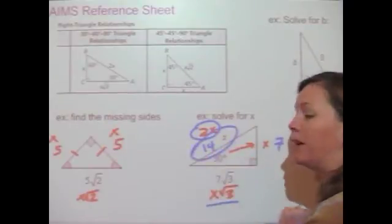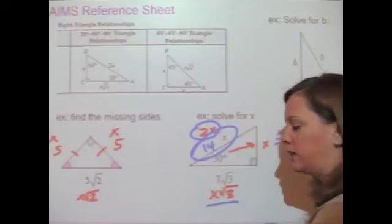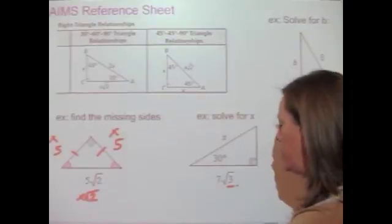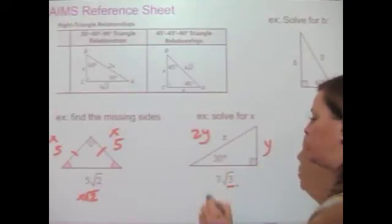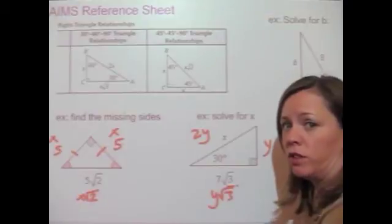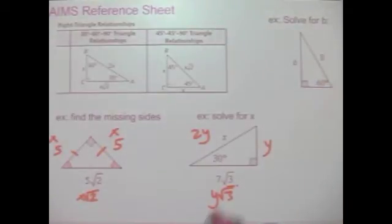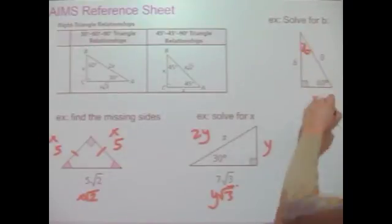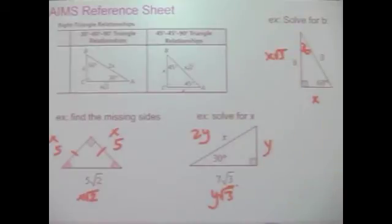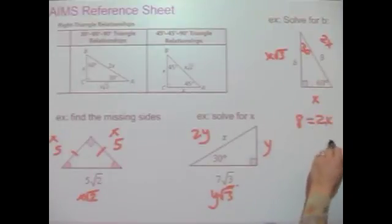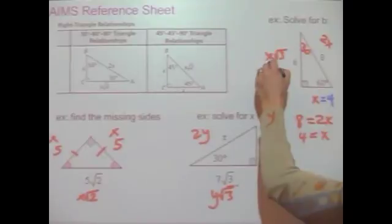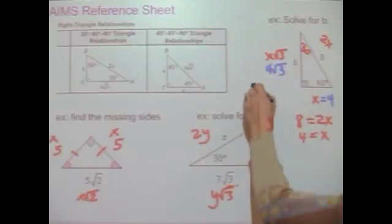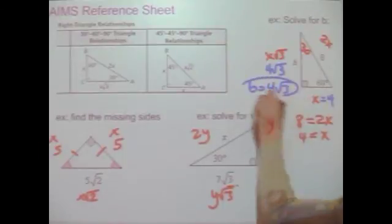So x in this case equals 14. If using two x's is confusing, use y's instead: the short leg is y, the hypotenuse is 2y, and the longer leg is y√3. For the last example, solve for b: the side across from the 30 is x, across from the 60 is x√3, and the hypotenuse is 2x. The hypotenuse is 8, so 8 equals 2x, meaning x equals 4. Then b equals 4√3.